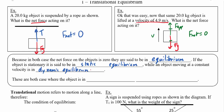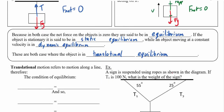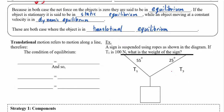Both the hanging object and the object that's moving in a straight line are examples of translational equilibrium. You might remember from math class the idea of a translation — in math this just means to move something side to side or up and down. So translational equilibrium refers to an equilibrium that's happening in the x and the y direction.